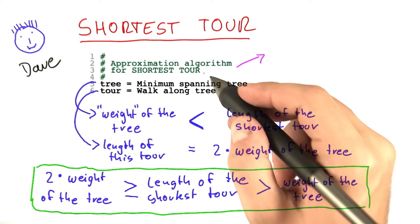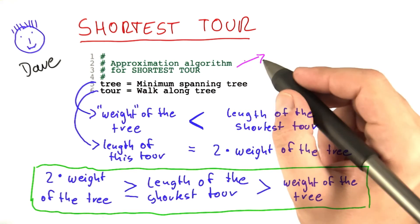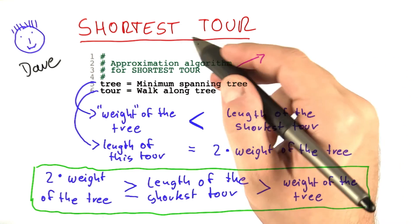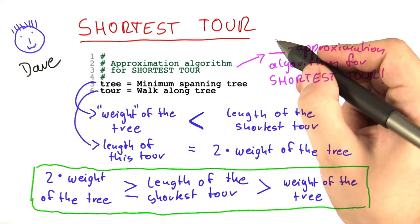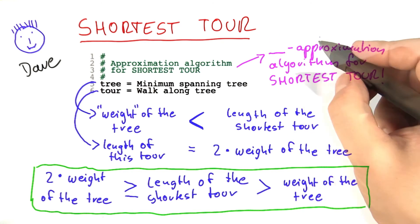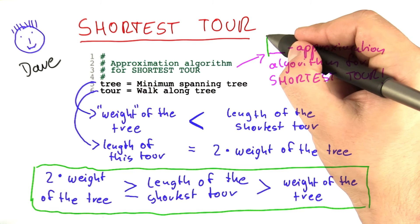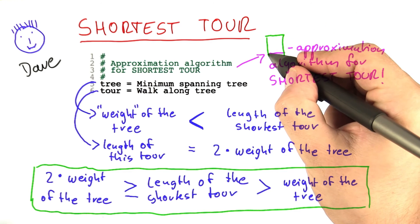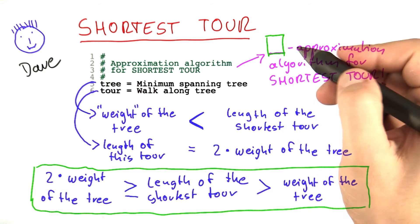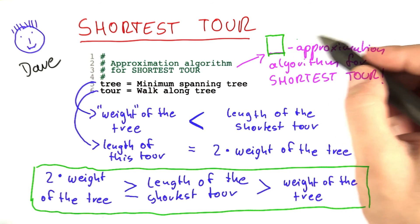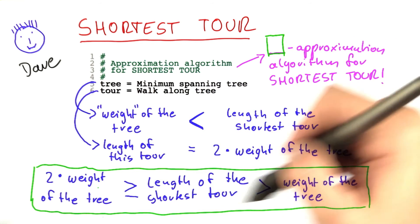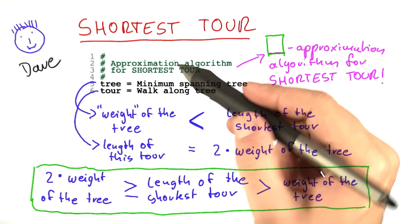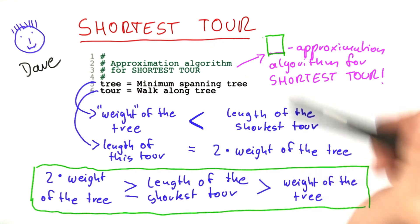And this means that the algorithm I've specified here is actually a constant factor approximation algorithm for shortest tour. Oh, I forgot to write the factor here. Well, of course, I did that deliberately because this is going to be your final quiz for this algorithm. Please tell me what is the approximation factor using this information we've just figured out that this algorithm has for shortest tour.